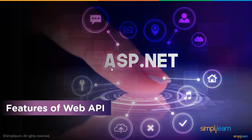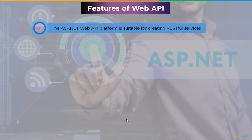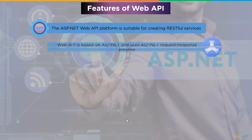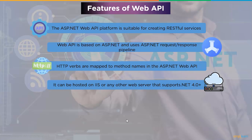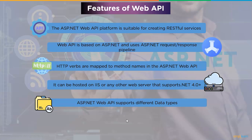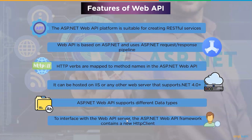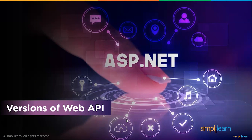Let's look at the key features of Web API. The ASP.NET Web API platform is suitable for creating RESTful services. It is based on ASP.NET and uses the ASP.NET request-response pipeline. HTTP verbs are mapped to method names. It can be hosted on IIS, self-hosted, or any web server supporting .NET 4.0 or above. Different data types are supported natively including JSON, XML, and other formats. The framework also contains a new HTTP client that can be used in ASP.NET MVC, Windows Forms, console applications, and other applications.